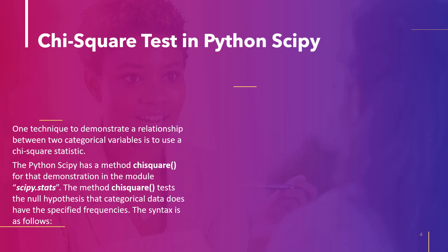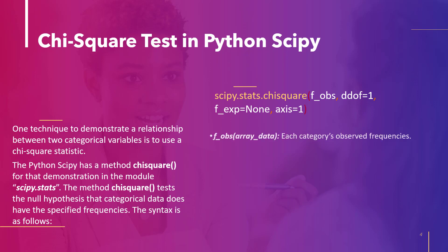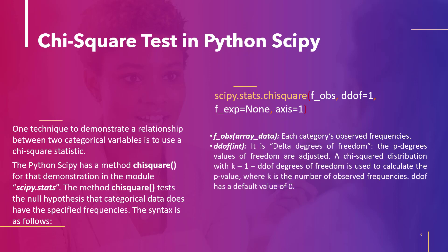A chi-square statistic is one way to show a connection between two categorical variables. The Python SciPy module scipy.stats contains a method chisquare, which is used to evaluate whether categorical data has the desired frequencies. The syntax parameters include: f_obs, which represents the observed frequencies in each category; ddof (delta degrees of freedom), an adjustment to the degrees of freedom for the p-value — the p-value is computed using a chi-square distribution with k-1 minus ddof, where k is the number of observed frequencies, and the default value of ddof is 0.